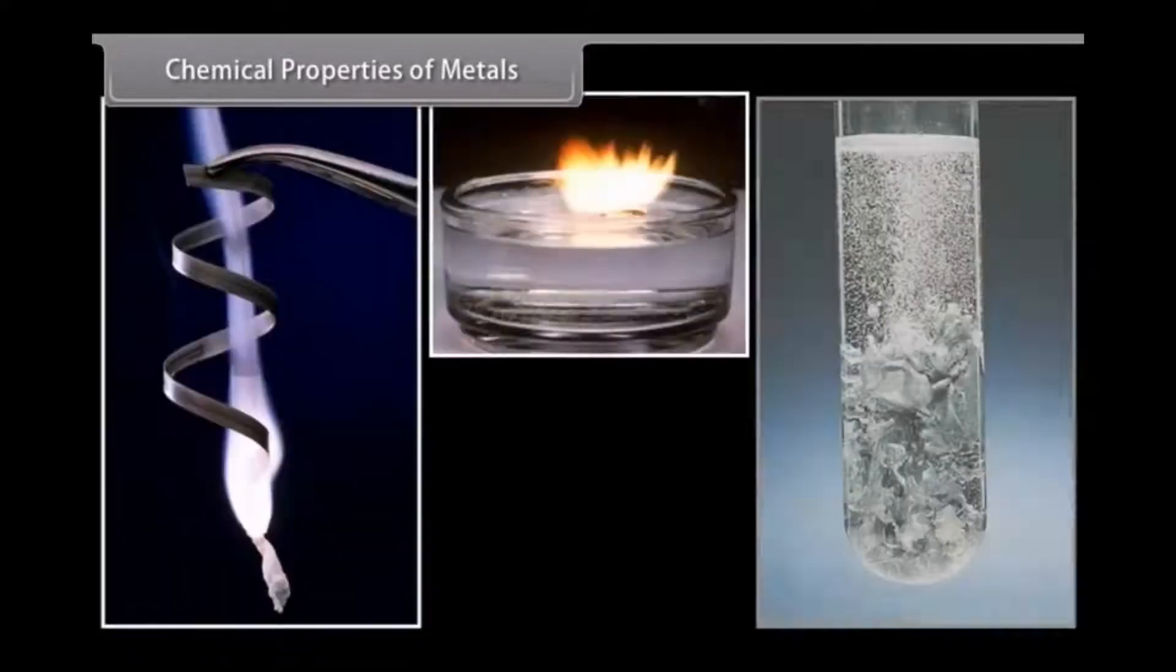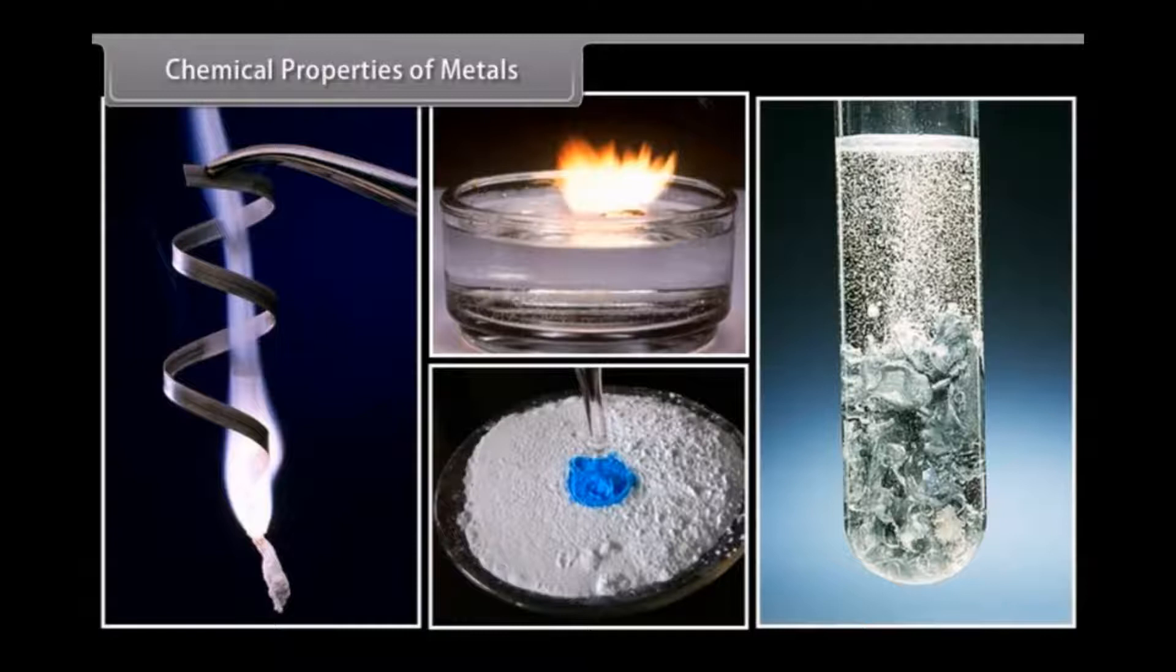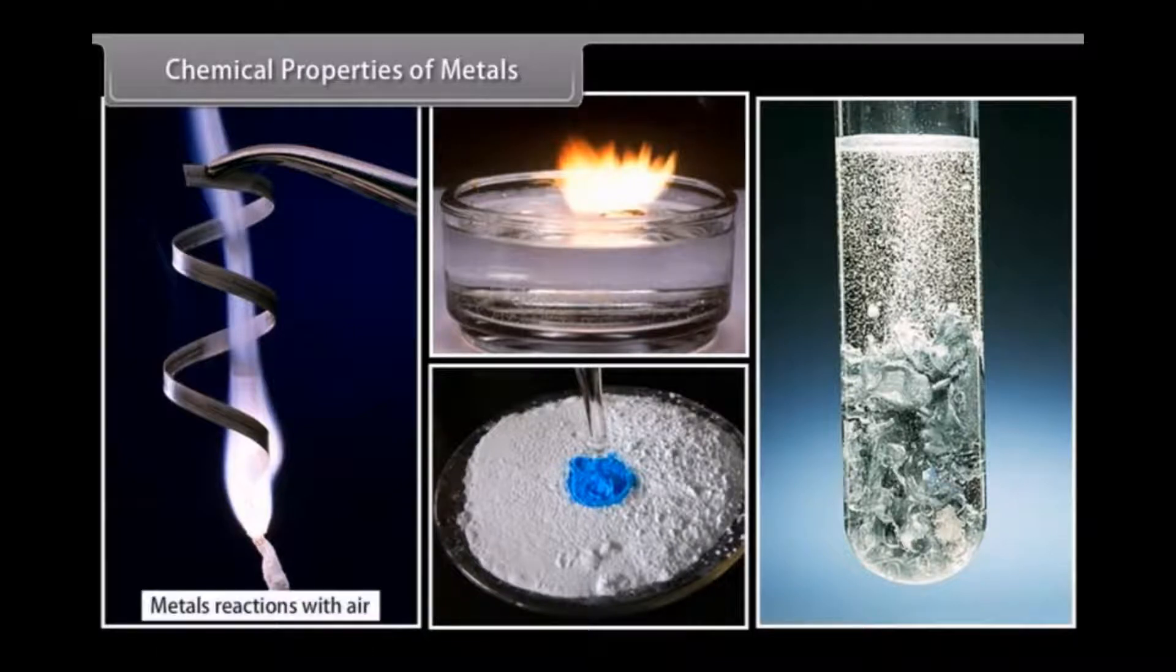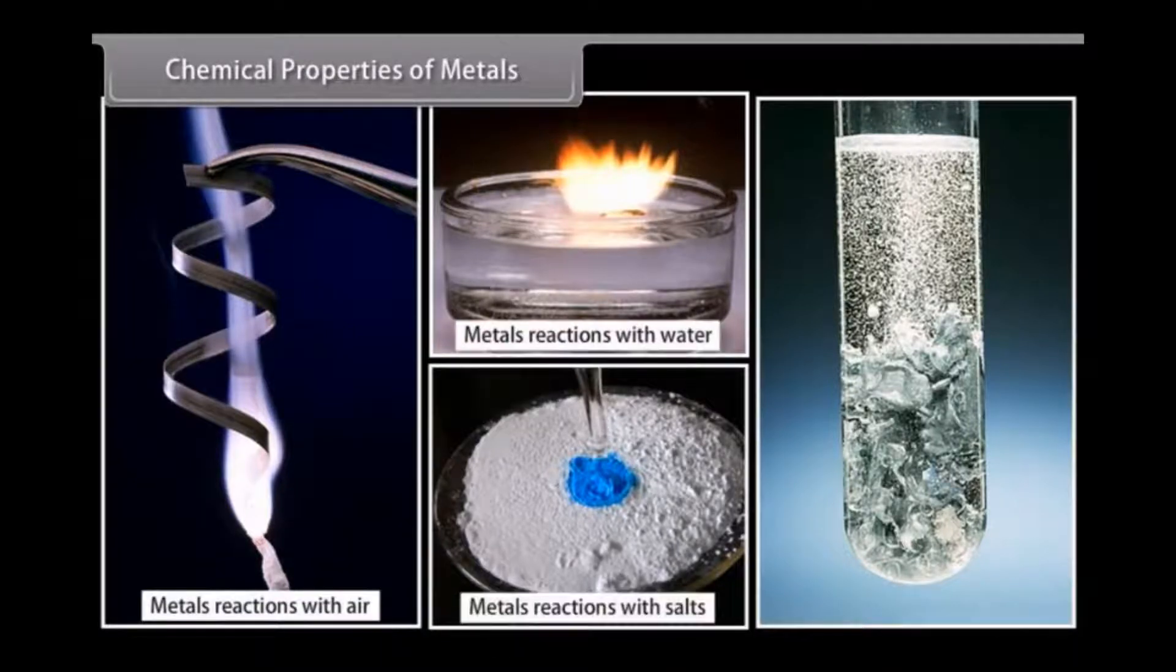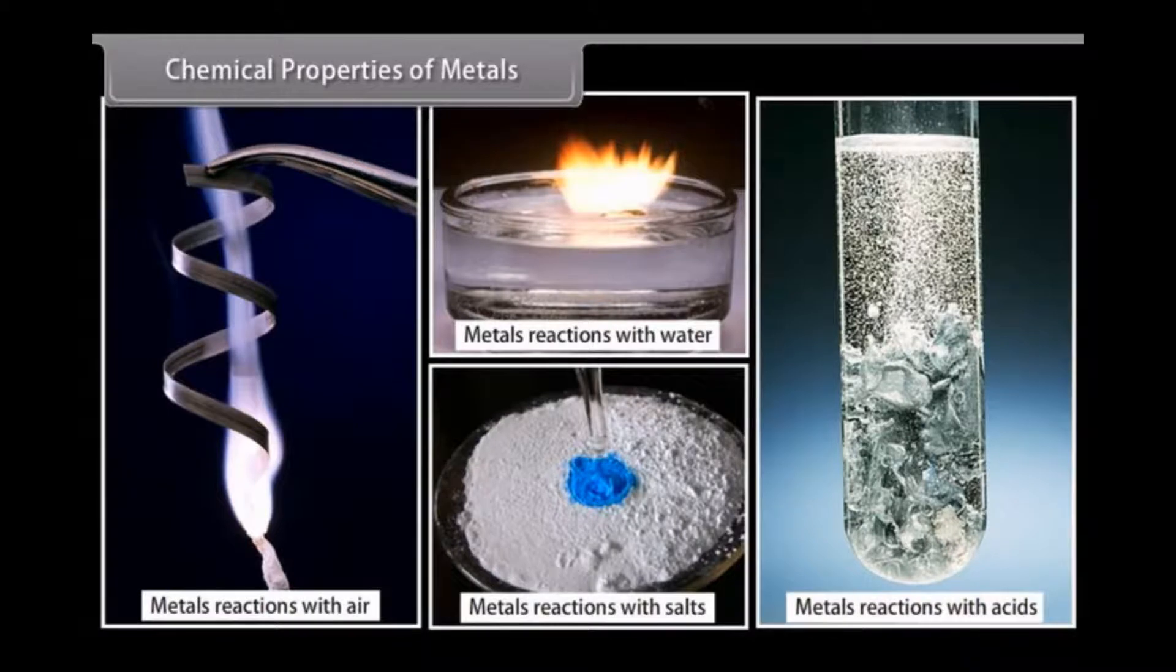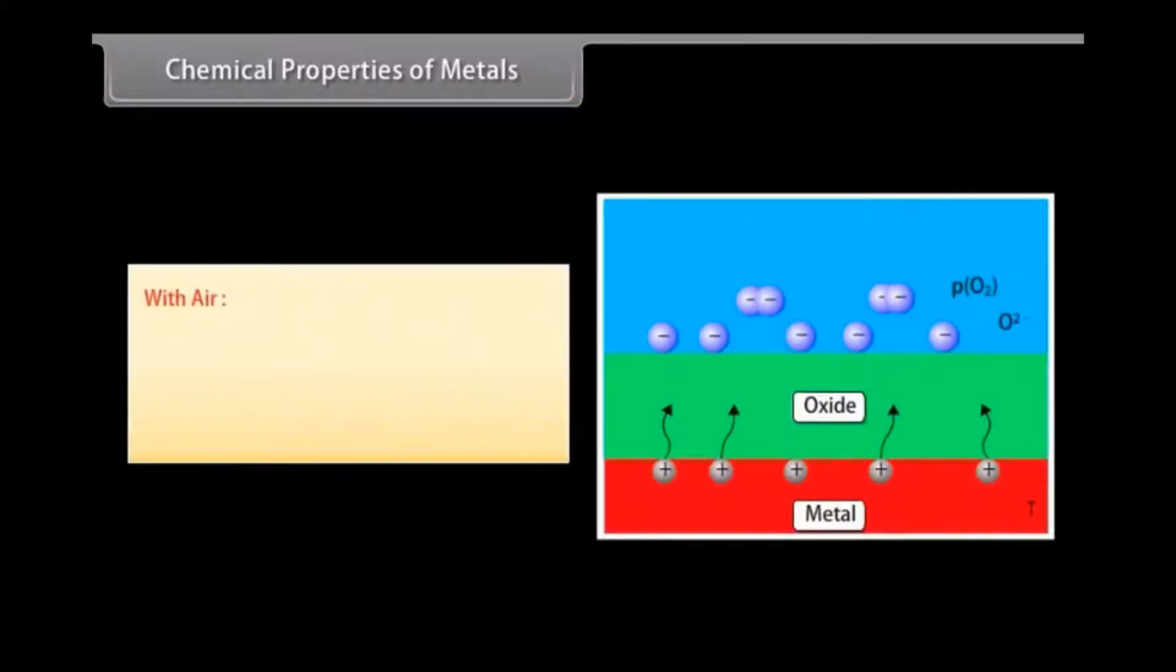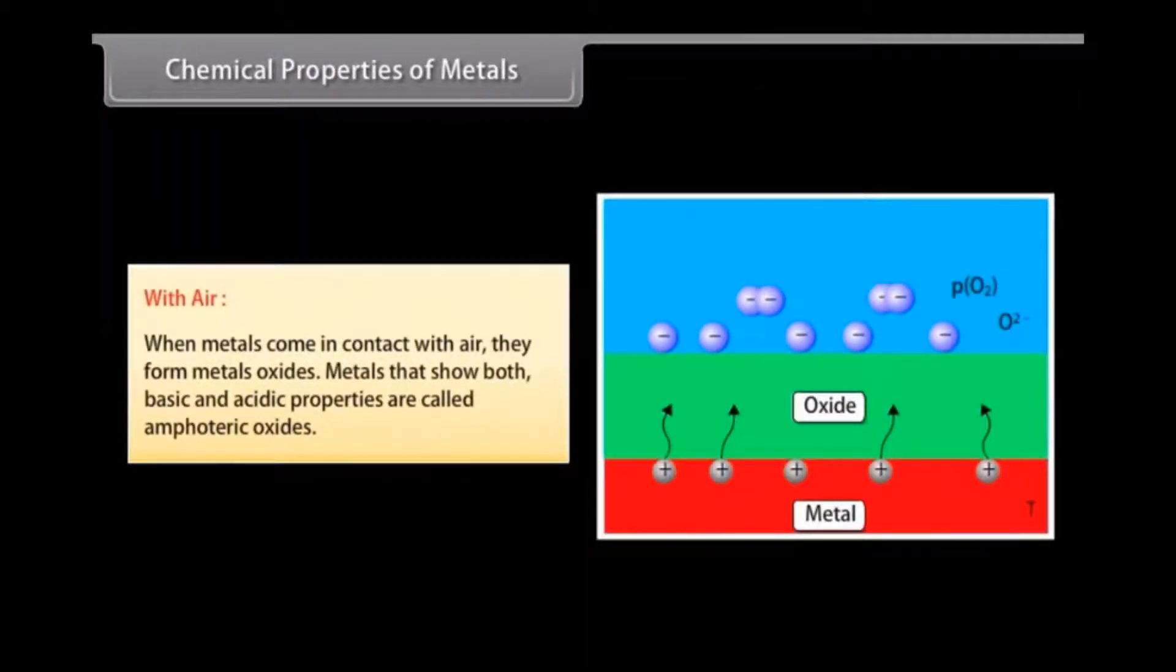Chemical properties of metals. Let us look at some chemical properties of metals. These properties include reactions of metals with other elements, that is, air, water, acids and other metal salts. With air: When metals come in contact with air, they form metal oxides. There are some metals that show both basic and acidic properties. Such metals are called amphoteric oxides.